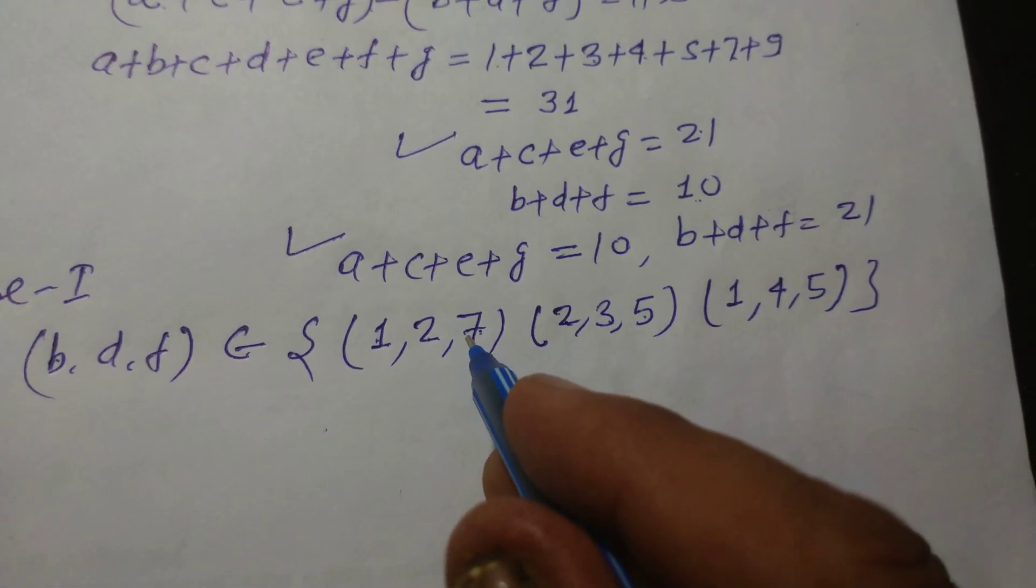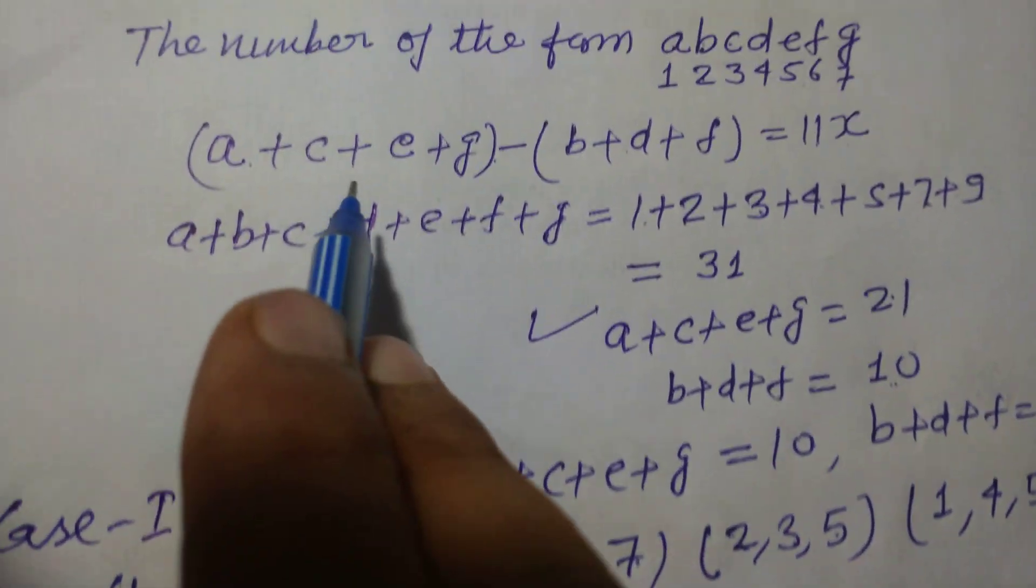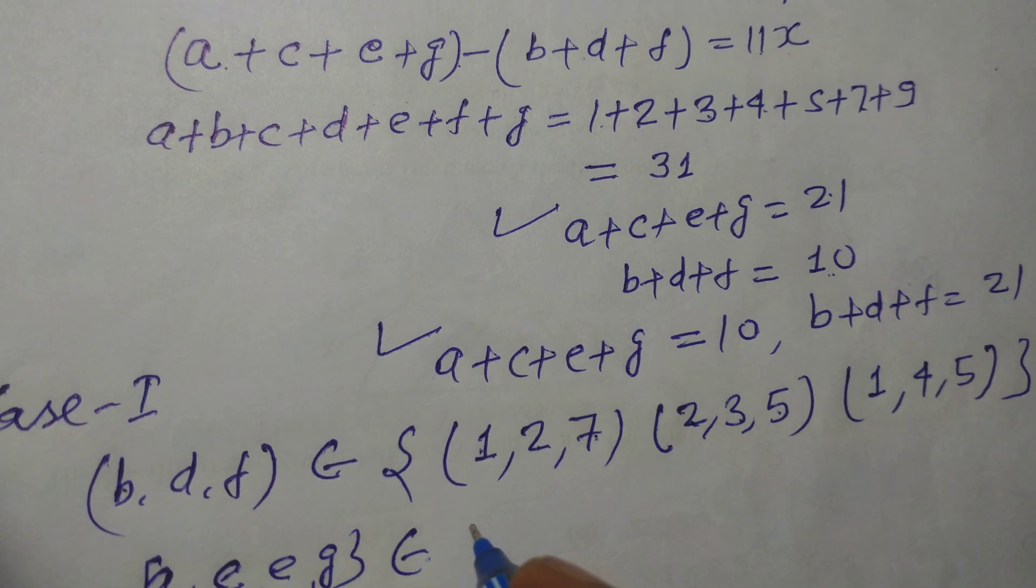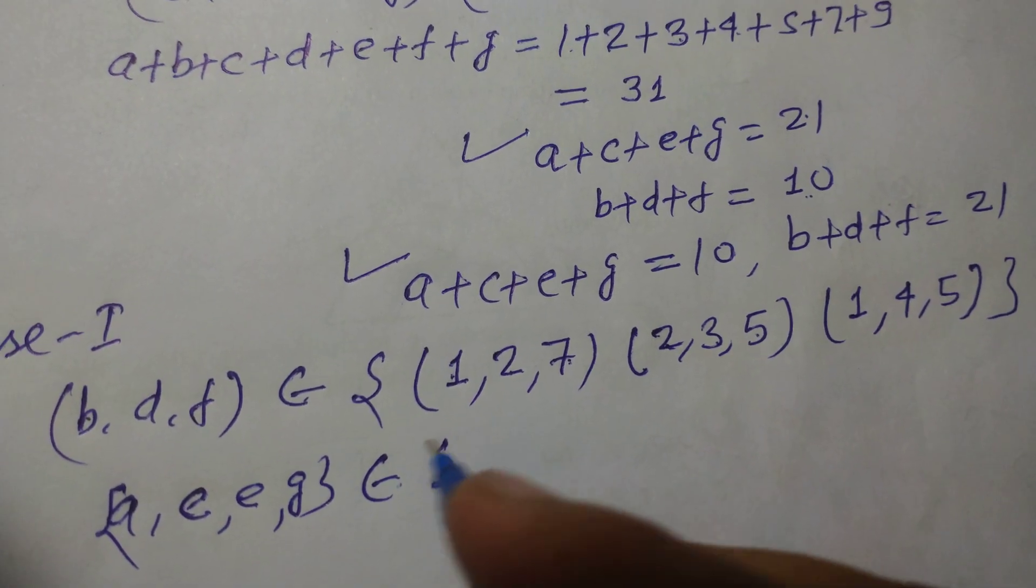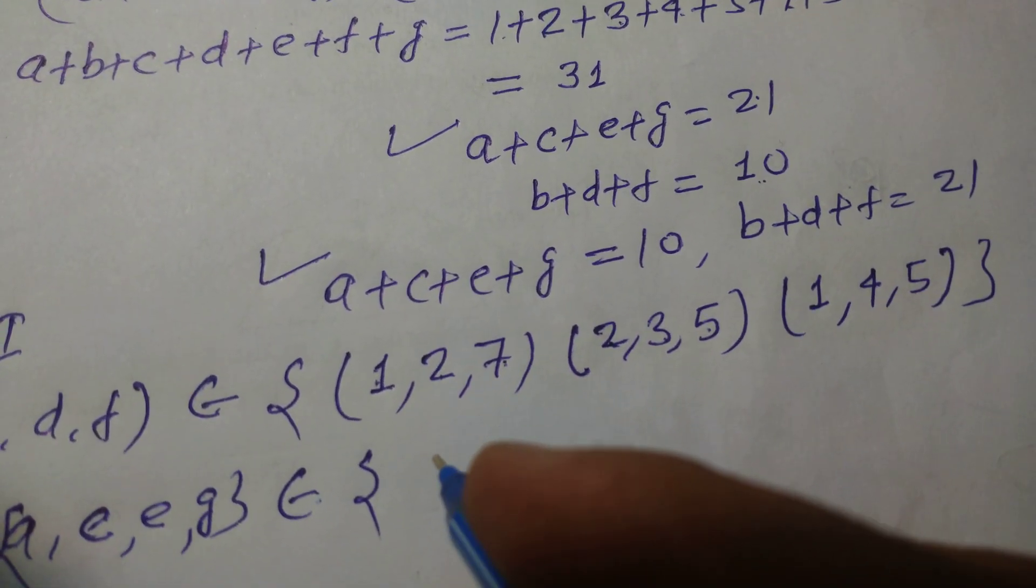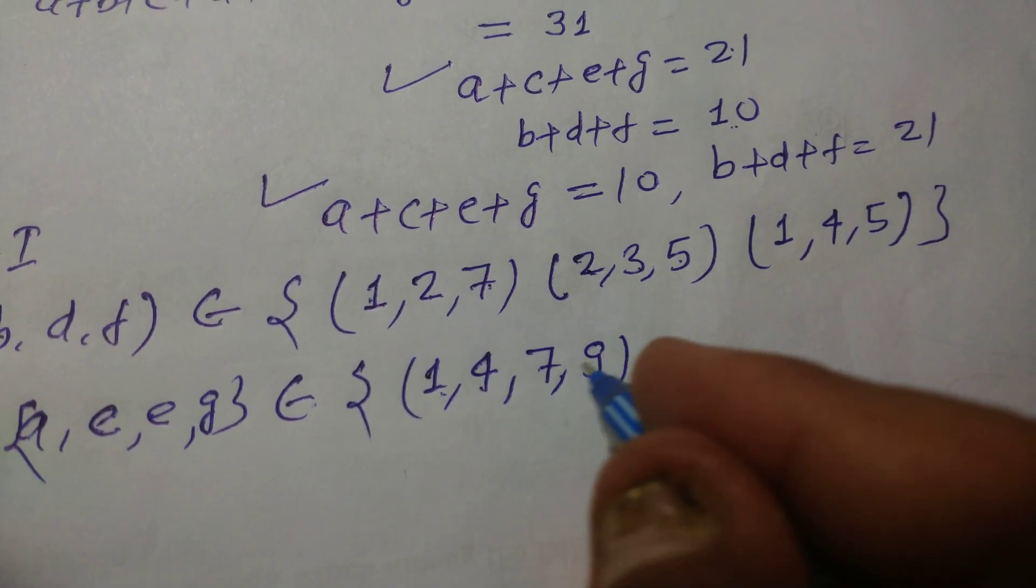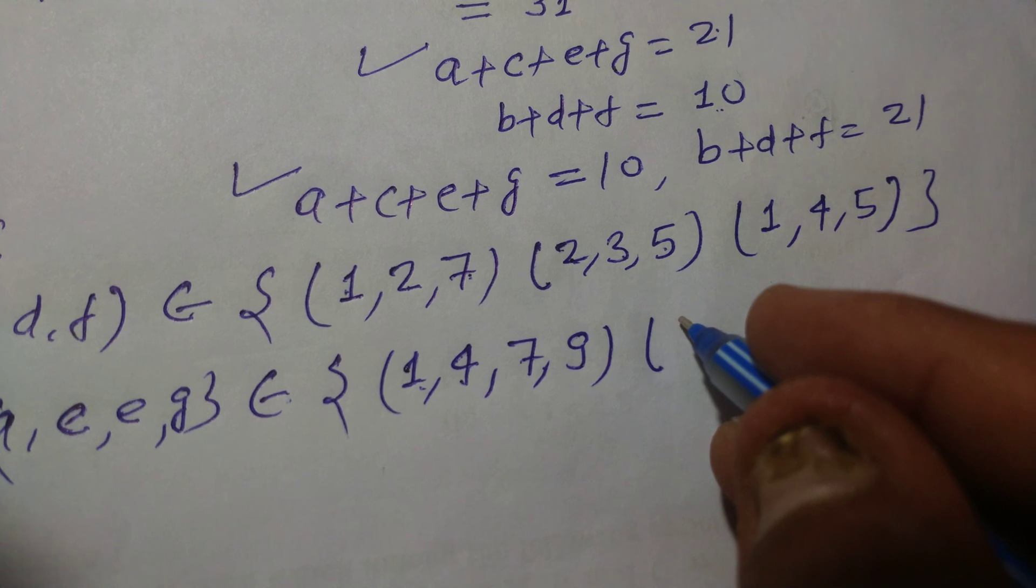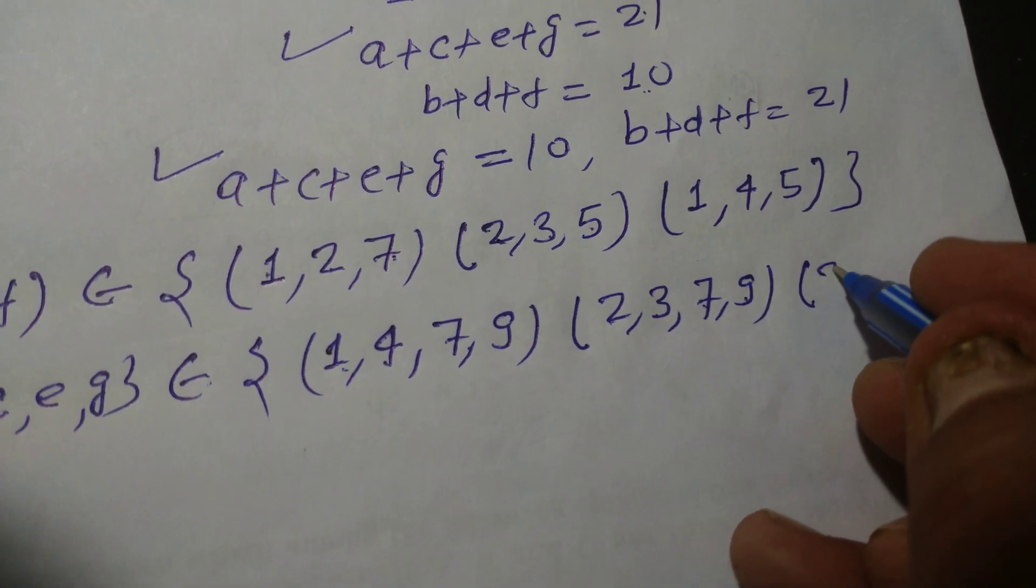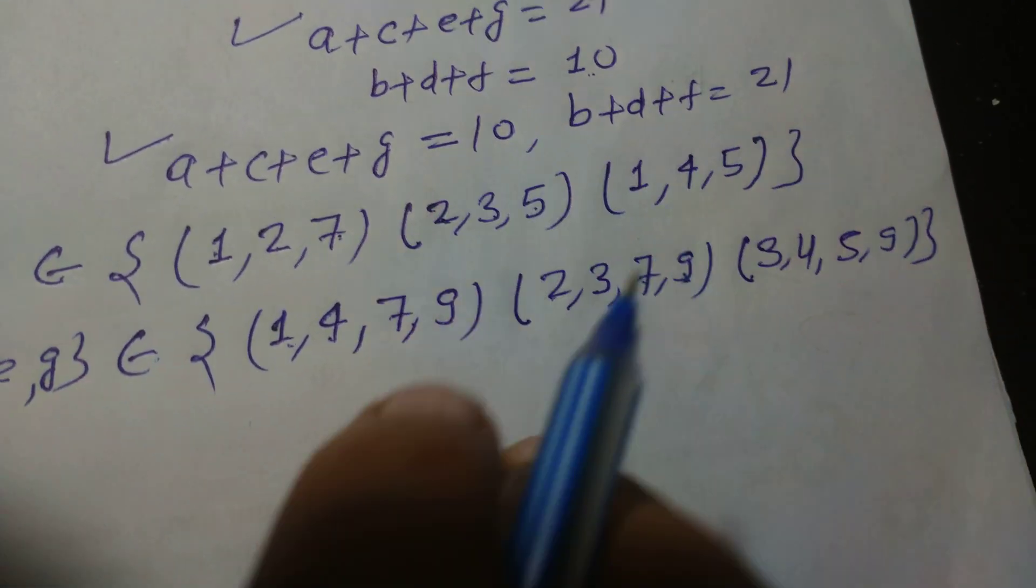And A, C, E, G belongs to the set of four numbers from 1, 2, 3, 4, 5, 7, and 9 which sum to 21. These are {1, 4, 7, 9}, another pair is {2, 3, 7, 9}, and {3, 4, 5, 9} is another set. So these are three sets or three elements in the set of A, C, E, G.